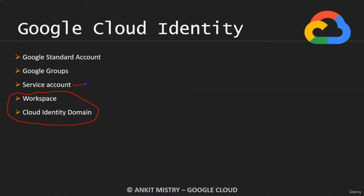Service account is mainly used when an application wants to communicate with another application — it is not for the human, but you can use it with some keys or tokens. Google standard account is the account which we have created and logged into the Google Cloud Platform. Google Groups are nothing but a collection of Google accounts. Rather than assigning a role to an individual user, you can provide a role to the group, and all those roles will be applied to every single user who is a part of that group.